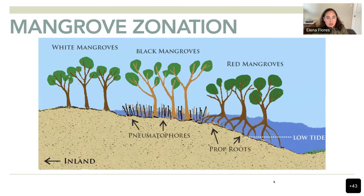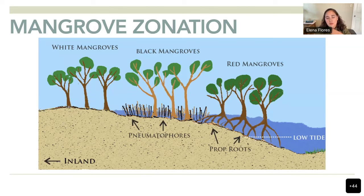They have developed specific characteristics depending on their environment. In Florida, we have white mangroves near the inland, where they experience less water influence and fewer inundations compared to the black and red mangroves. Both black and red mangroves are known for having root structures that help them cope with water and anoxic soils.